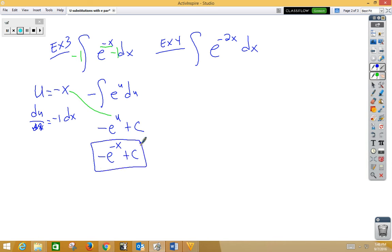In example 4, notice our exponent is negative 2x. So u is negative 2x. That means du is negative 2 dx. Now, I need a negative 2 dx. I only have a dx. So if I want to include a negative 2 on the inside, since that's multiplication, I'm going to need a negative half on the outside. So now I have a negative 1 half integral e to the u du.